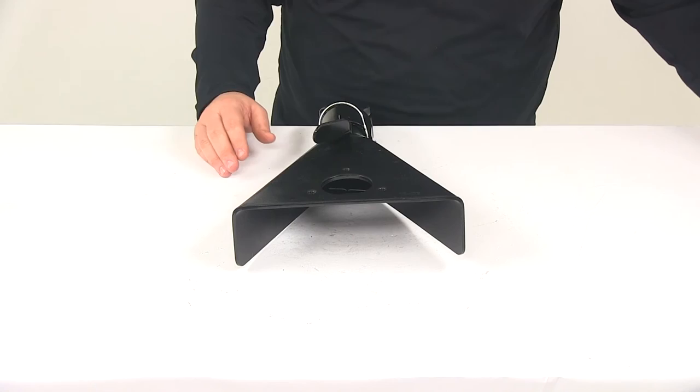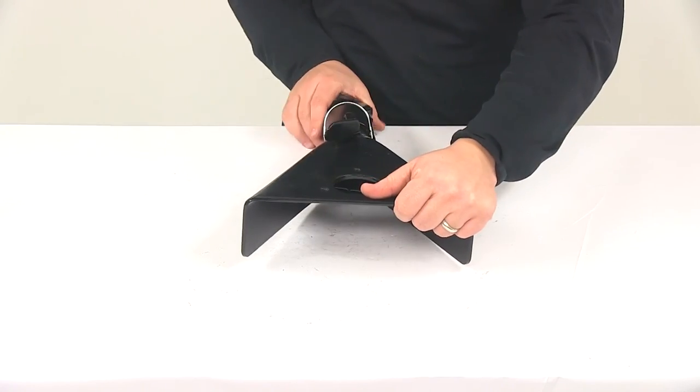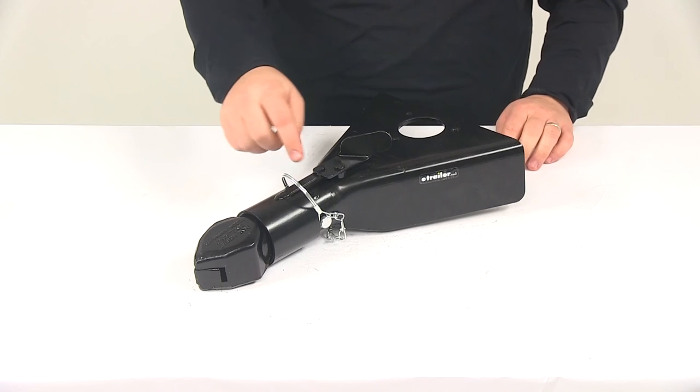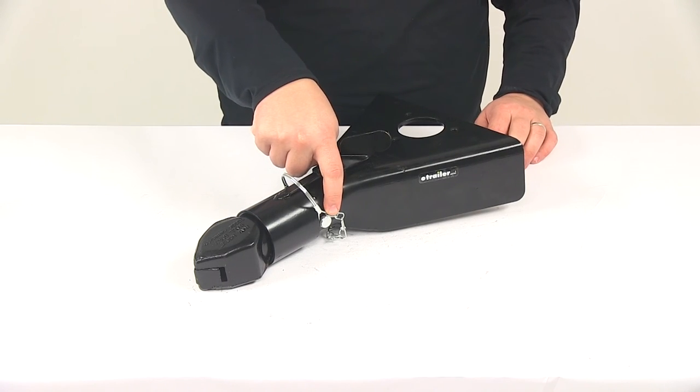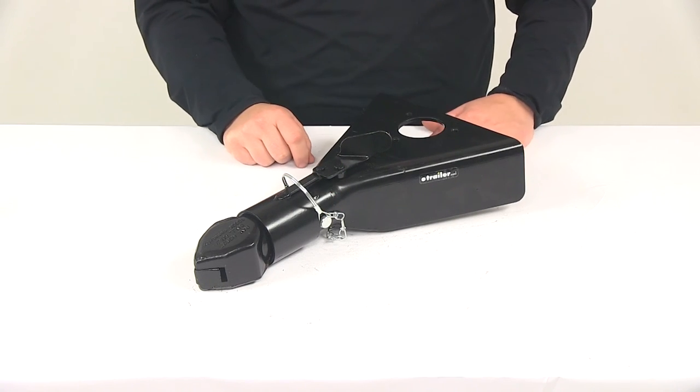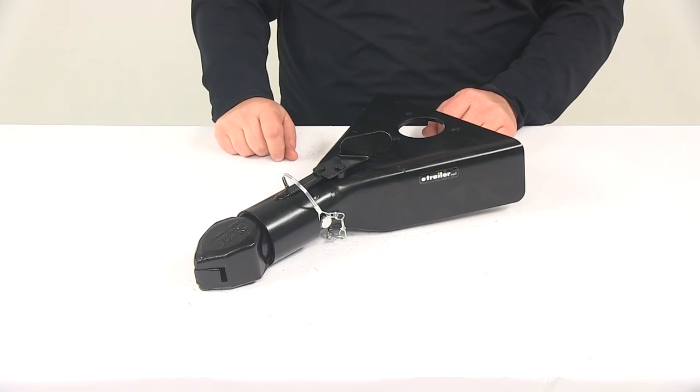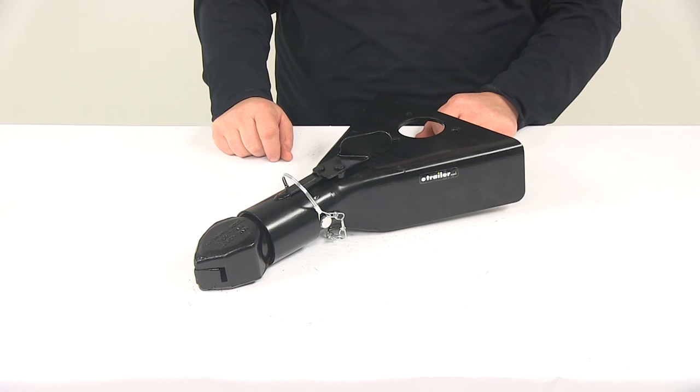Now again on the latch mechanism it does feature that included pin that can be replaced with a locking pin or a coupler lock. The diameter of that hole is going to measure five sixteenths of an inch and then the minimum span needed or the usable pin length needed for a coupler lock is going to be two and one quarter of an inch.